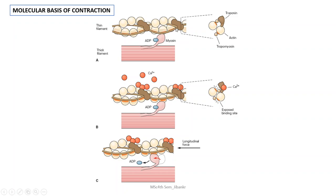During the contraction process, the thin filaments slide over the thick filament and come closer towards the M line, resulting in the shortening of the sarcomere. The molecular basis of muscle contraction is how this sliding occurs at the molecular level.